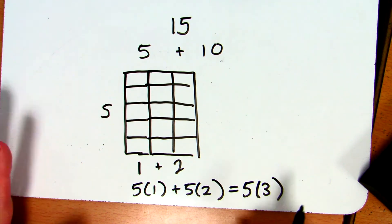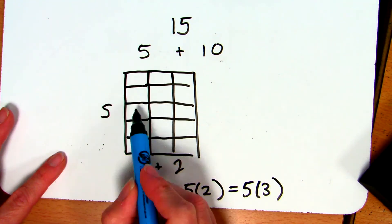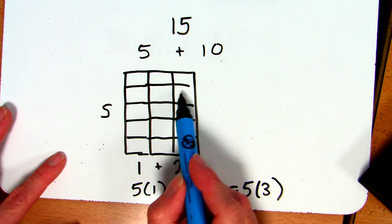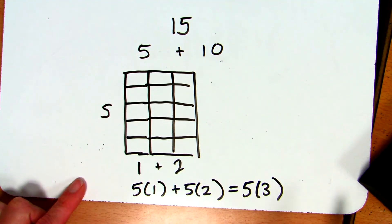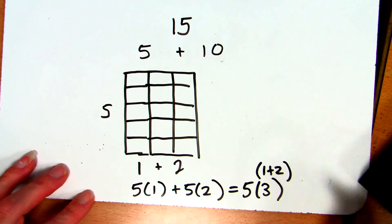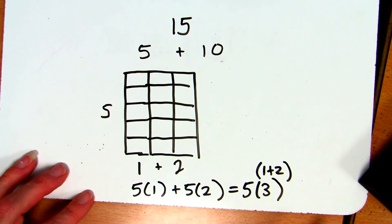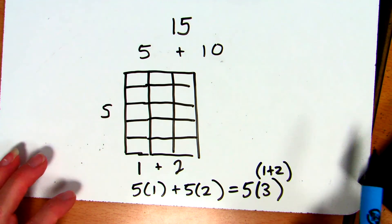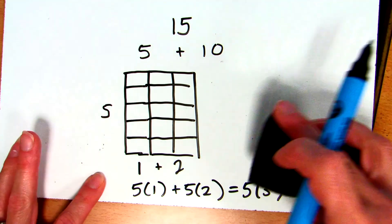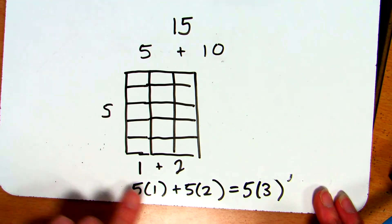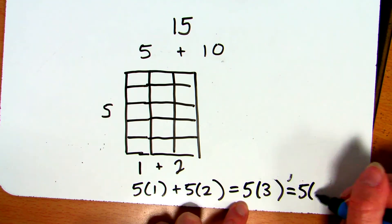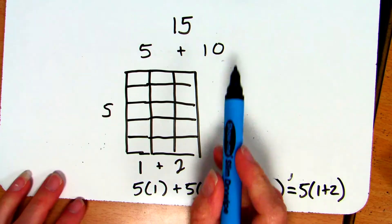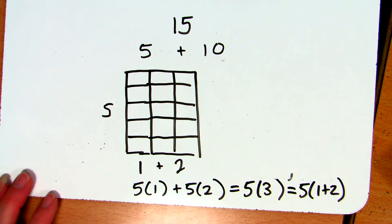I can show that: one rectangle had an area of 5 (5 by 1), another had an area of 10 (5 by 2). Put the two rectangles together and now I have a rectangle that is 5 by 3. So 5 times 1 plus 5 times 2 is the same as 5 times 3, because 3 is just 1 plus 2. That's the whole idea of the distributive property. So now we have multiple expressions for 15: 15, 5 plus 10, 5 times 1 plus 5 times 2, and 5 times 3 — five different equivalent expressions all for the number 15.